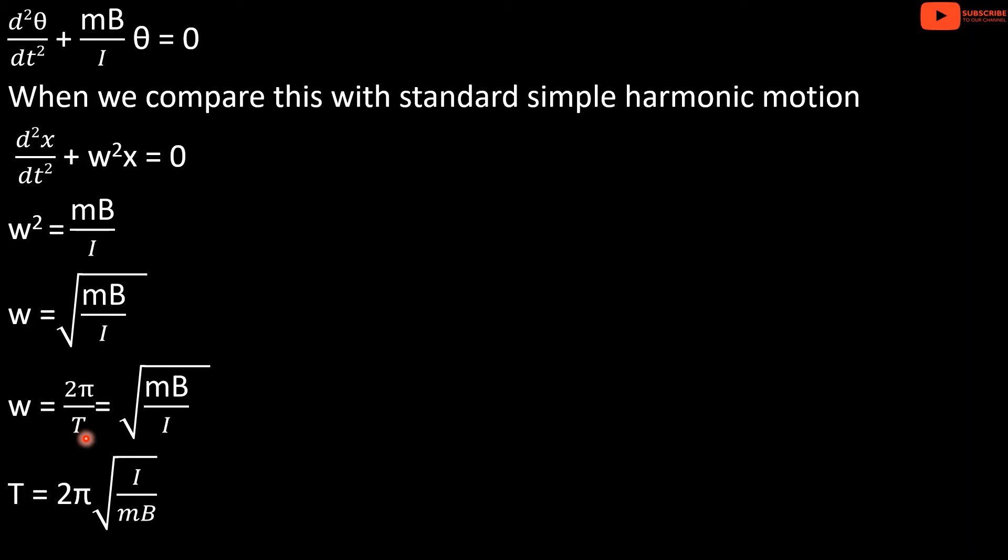From the SHM equation, 2π/T equals the square root of MB/I. Therefore, the time period T equals 2π times the square root of I divided by MB. This is the time period of oscillation of the magnetic needle in a magnetic field.